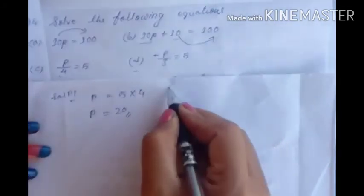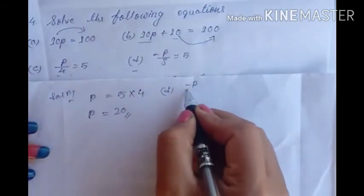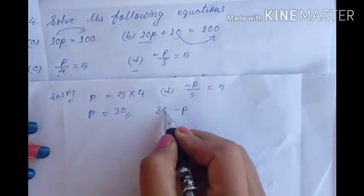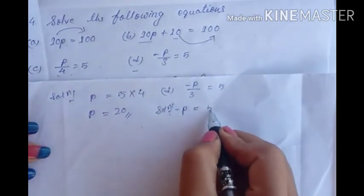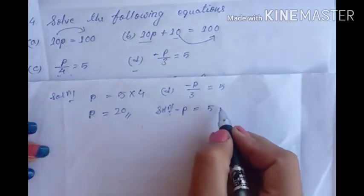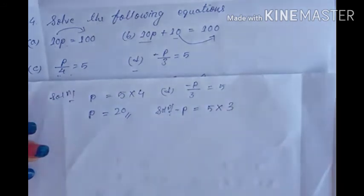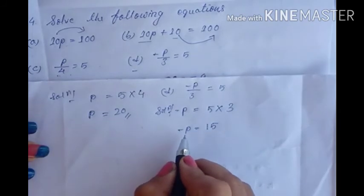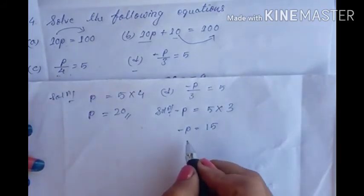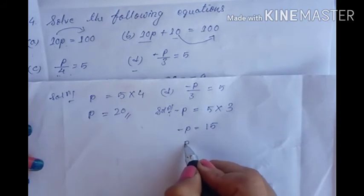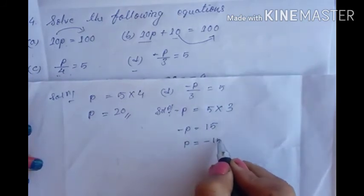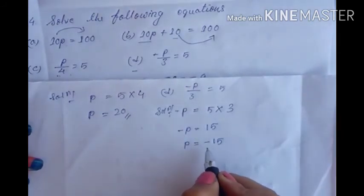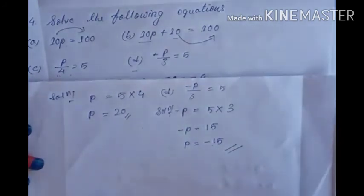For D: minus p upon 3 equals 5. First write the minus also: minus p equals 5, and since 3 is dividing, transposing it gives minus p equals 15. We need the variable in positive, so the minus moves to the right hand side, giving p equals minus 15.